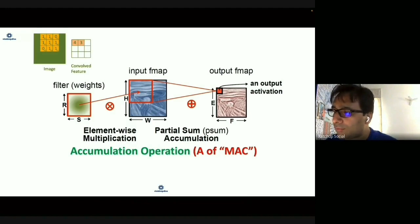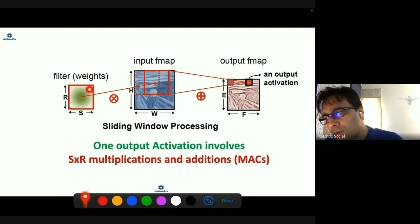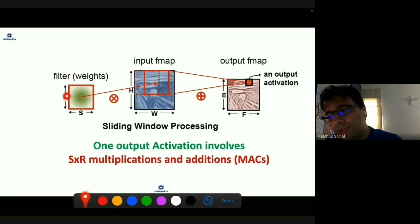You're processing this window - you first do it here, then you move. How much you move depends on the algorithm: some move by one step. But in terms of computation, generating one output involves putting this filter over the input, multiplying and adding.